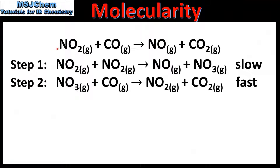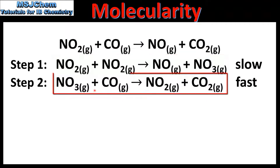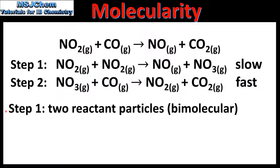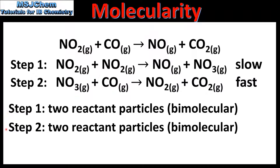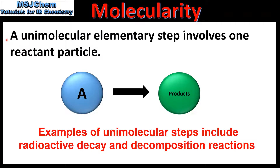Step one is a unimolecular elementary step and step two is a bimolecular elementary step. In our next example we have a reaction together with a proposed two-step mechanism. The first step involves the reaction of two particles of NO2, and the second step involves the reaction between one particle of NO3 and one particle of CO.